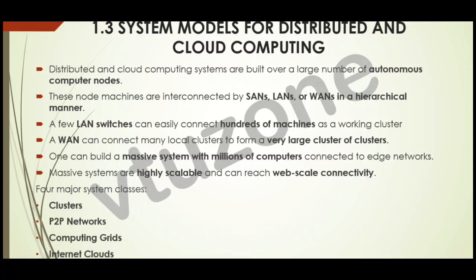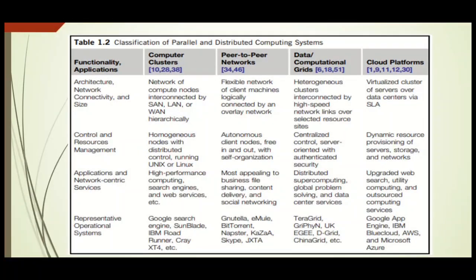This table compares different types of parallel and distributed computing systems. The first type is computer clusters, which connect many computers to work together, often in a local area network or wide area network, organized hierarchically. Nodes are uniform or centrally managed and run high-performance tasks. These are used for search engines, web services, and computing — for example, Google Search or IBM Road Runner.